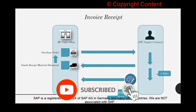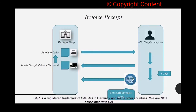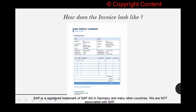We have seen two transactions in the previous videos: the first one was to create a purchase order, the second one was to receive the goods against the purchase order. After the vendor sends us the goods, he's also going to send us an invoice, which is basically a bill — the amount you're going to pay for those goods. Invoice and bill mean the same thing; invoice is the business standard term, bill is common language.